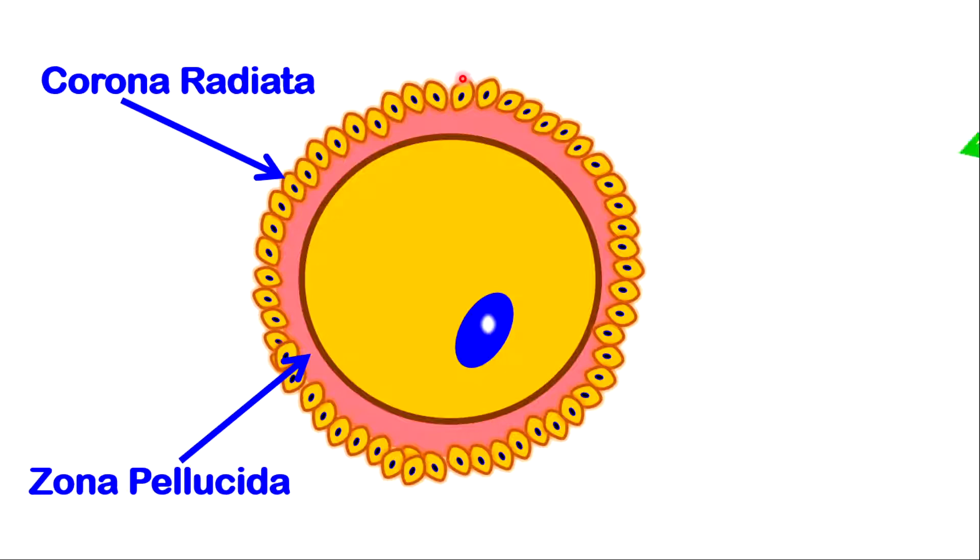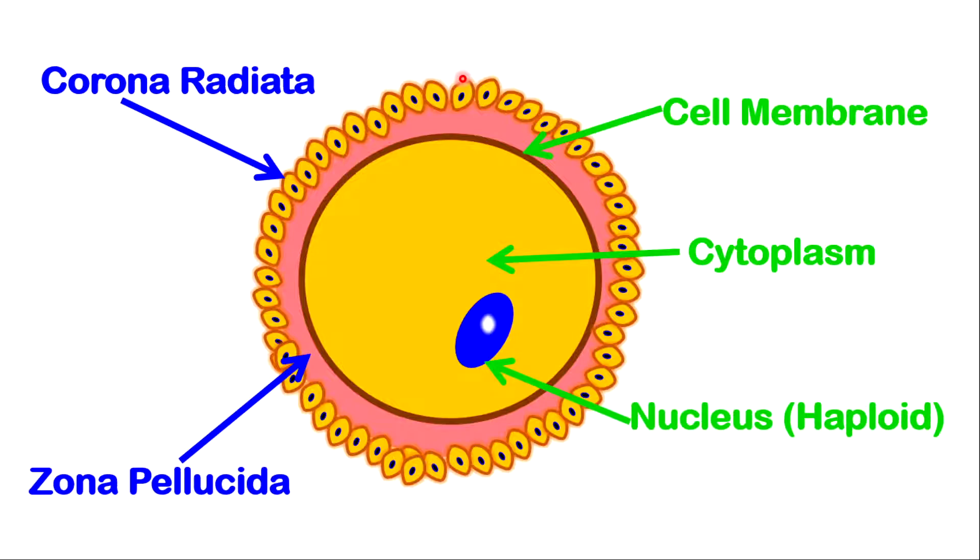Like regular cells, there will be a cell membrane, there will be a cytoplasm, and a nucleus. The nucleus is said to be haploid because it contains half the number of chromosomes compared to regular body cells. In the case of human beings, there will be only 23.